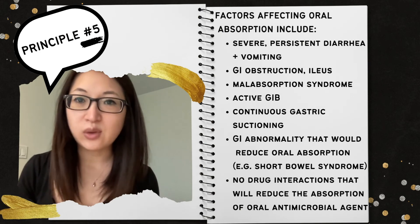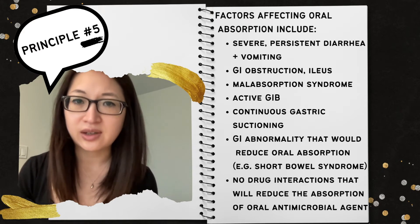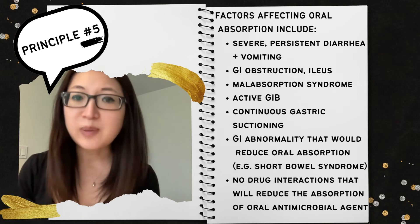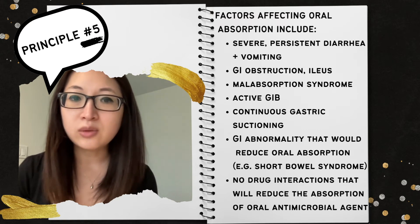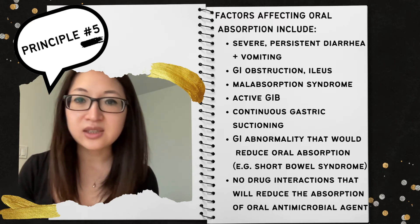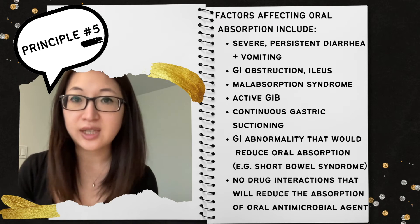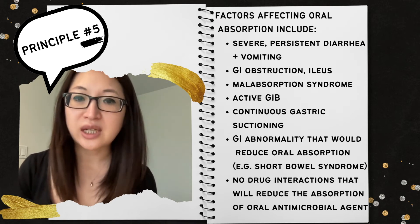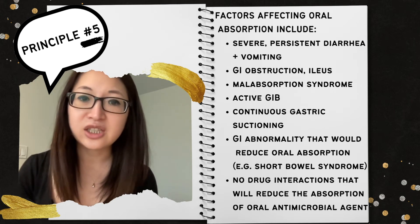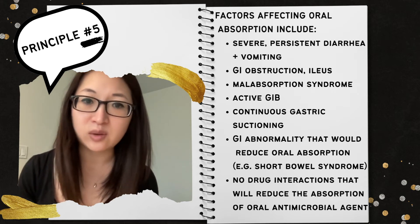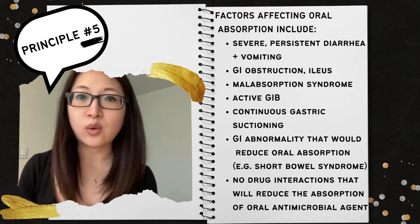To assess for factors affecting oral absorption, look in the chart or ask team members and nurses to ensure none of the following are present. The patient should not be experiencing severe or persistent diarrhea or vomiting. There should be no GI tract obstruction such as ileus or malabsorption syndrome, no active GI bleed, and no continuous gastric suctioning via nasogastric tube. There should be no GI tract abnormality that would reduce oral absorption, such as significant small bowel resection like short bowel syndrome, and no drug interactions that would reduce the amount of oral drug absorbed.